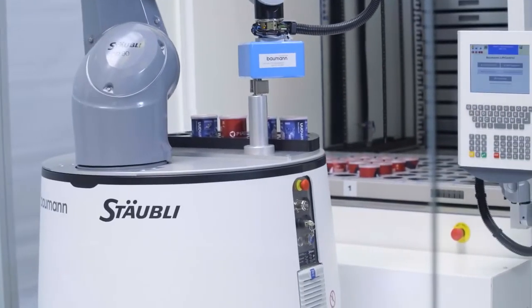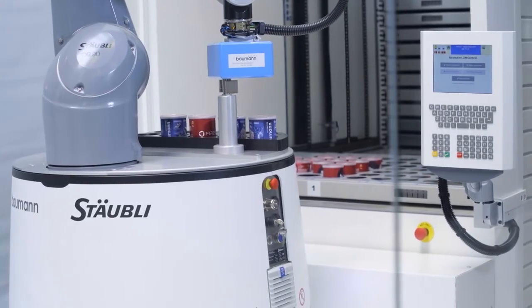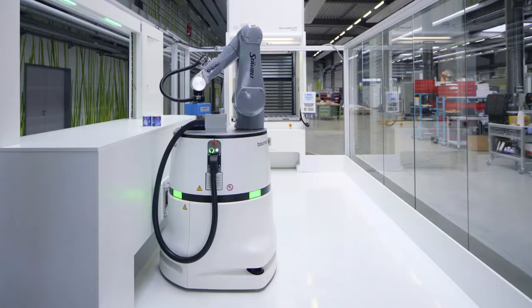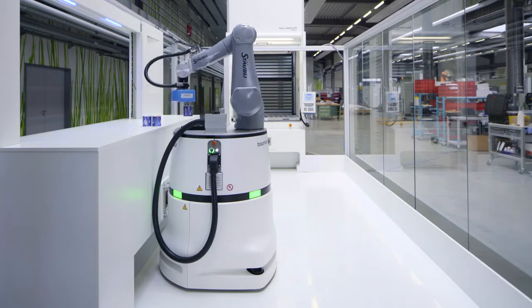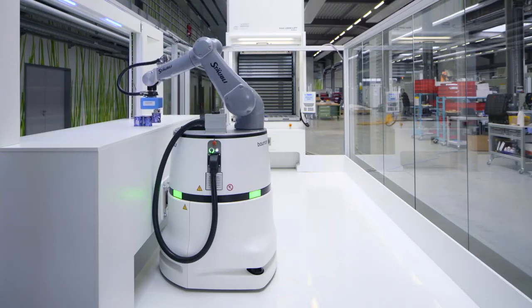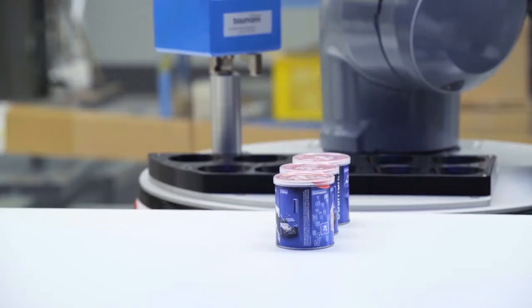The mobile robot system performs tasks autonomously and moves from one work area to the next on its own. In the future, work will involve direct collaboration between humans and robots.